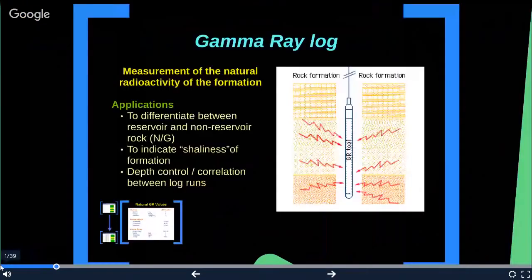Let's start from the gamma ray log. The gamma ray tool is a passive logging tool. It records the naturally occurring radiation of gamma rays from the formation. Gamma rays are bursts of high-energy electromagnetic waves continuously emitted by some radioactive elements. Nearly all the gamma radiation encountered in the Earth is emitted by the radioactive potassium isotope, which has an atomic weight of 40, and by radioactive elements of the uranium and thorium series.